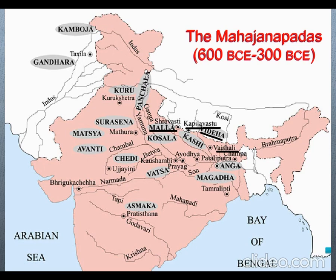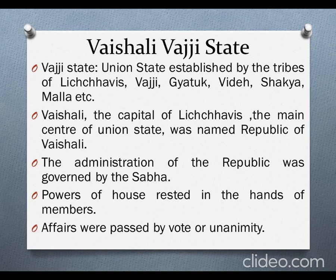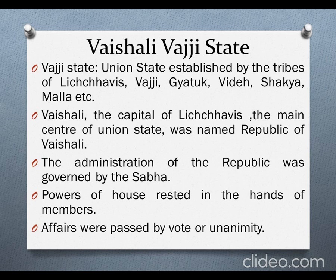As we studied about Magadha in the Monarchy system, let's study about Vaishali in the Republic system. The kings who wanted to increase their empire could only do that by acquiring surrounding territories. When small republics could not fight against them, they came together and established a union. Tribes like Licchavis, Vajji, Gyatuk, Videha, Shakya, Malla, etc. came together and established the union state for their protection, known as the Vajji state. Vaishali, the capital of the Licchavis, was the main center of the union state, hence it was named the Republic of Vaishali.